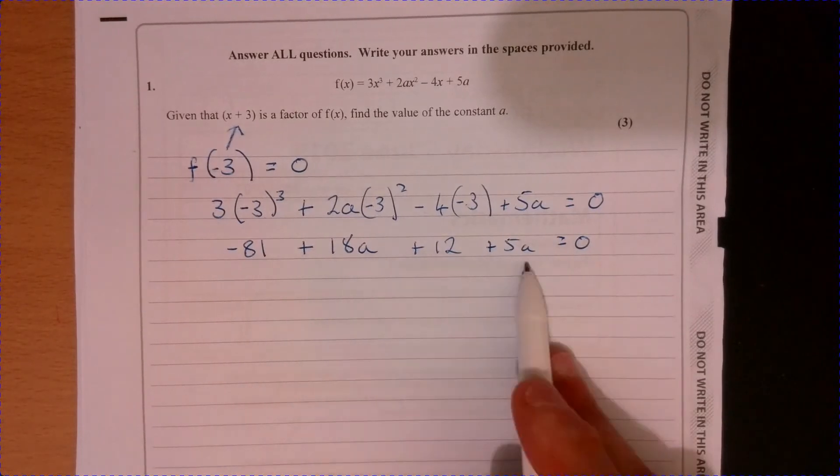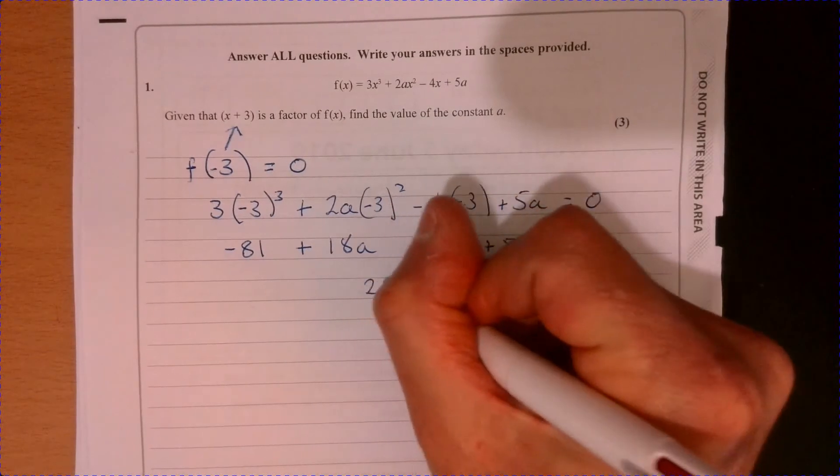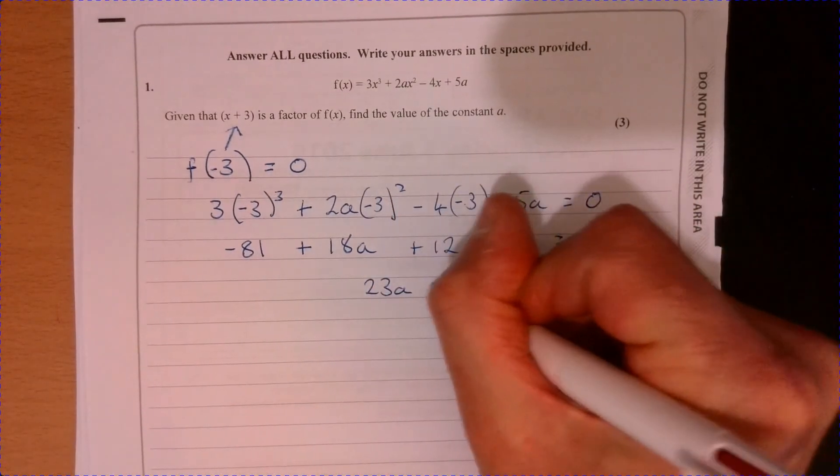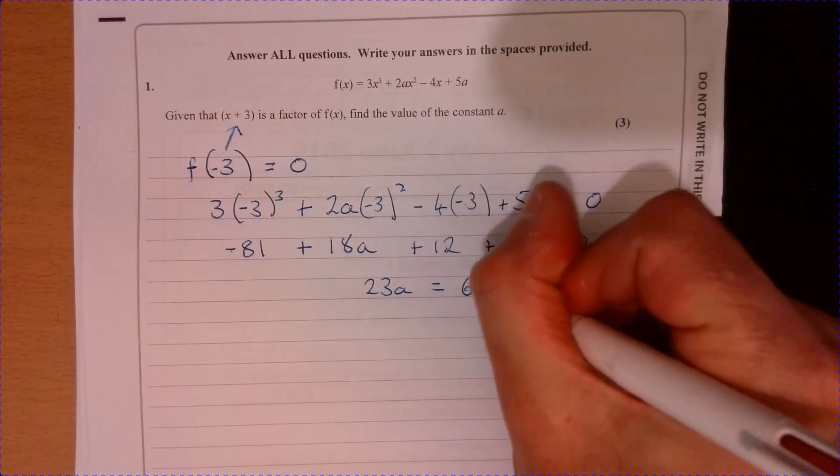OK, a little bit of messing about with this. Let's have a little look. So we've got 23a. Let's just tidy this up. And then that equals take away 12 plus 81. It's going to be 69.